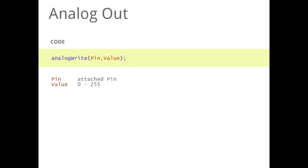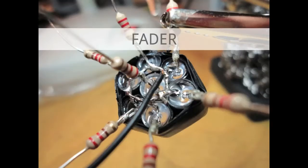So let's look into the code. The analog out is using the command which is called analog write. And it is like digital write. It gets a pin number and it gets a value. And as I said the value can be from 0 to 255.